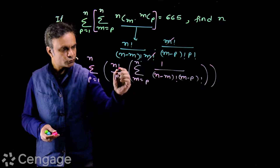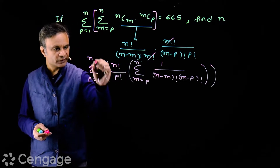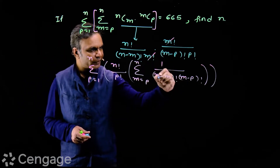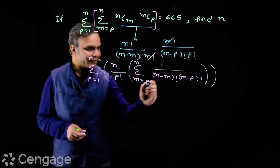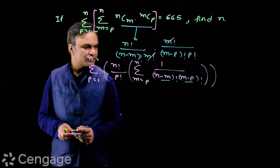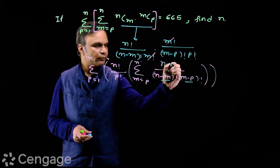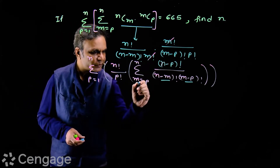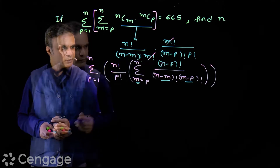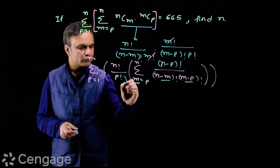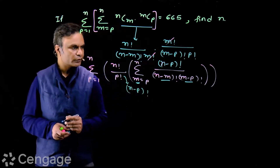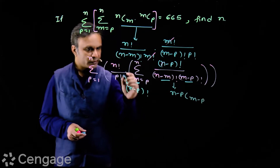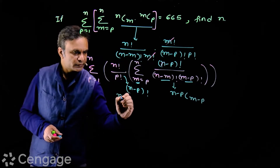Now to evaluate this inner sigma, I need to create one binomial coefficient. For that, I add (n minus m) and (m minus p), and this sum is (n minus p). So in the numerator I write (n minus p) factorial, multiplying by it here. This is constant with respect to m, so we divide by (n minus p) factorial outside. This gives us (n minus p) C (m minus p), and the outer factor is nCp.